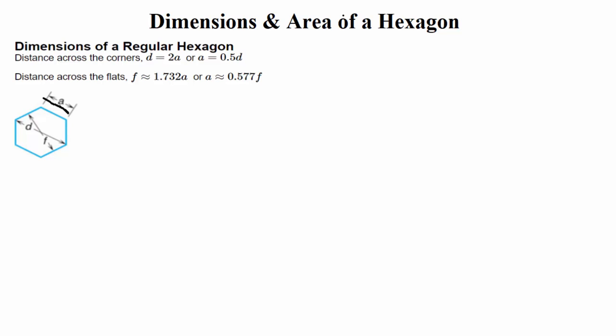Otherwise, you might have to calculate the distance across the hexagon, and there's two different ones. There's the distance across the corners, and that is from a corner, a vertice here, all the way across to a vertice on the other side. So corner to corner, that's called the distance across the corners. And in order to find the distance across the corners, we have these little formulas here. D is equal to 2A. So as long as you know what A is, the side of the hexagon, just multiply that by 2, and you're going to have the distance across the corners.